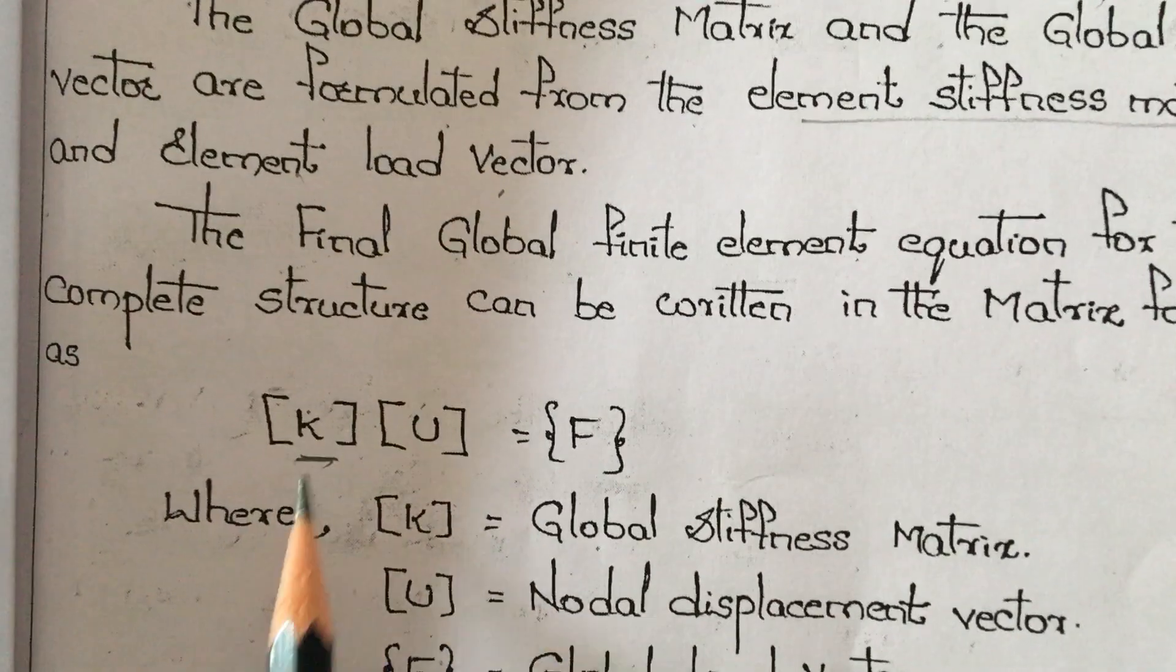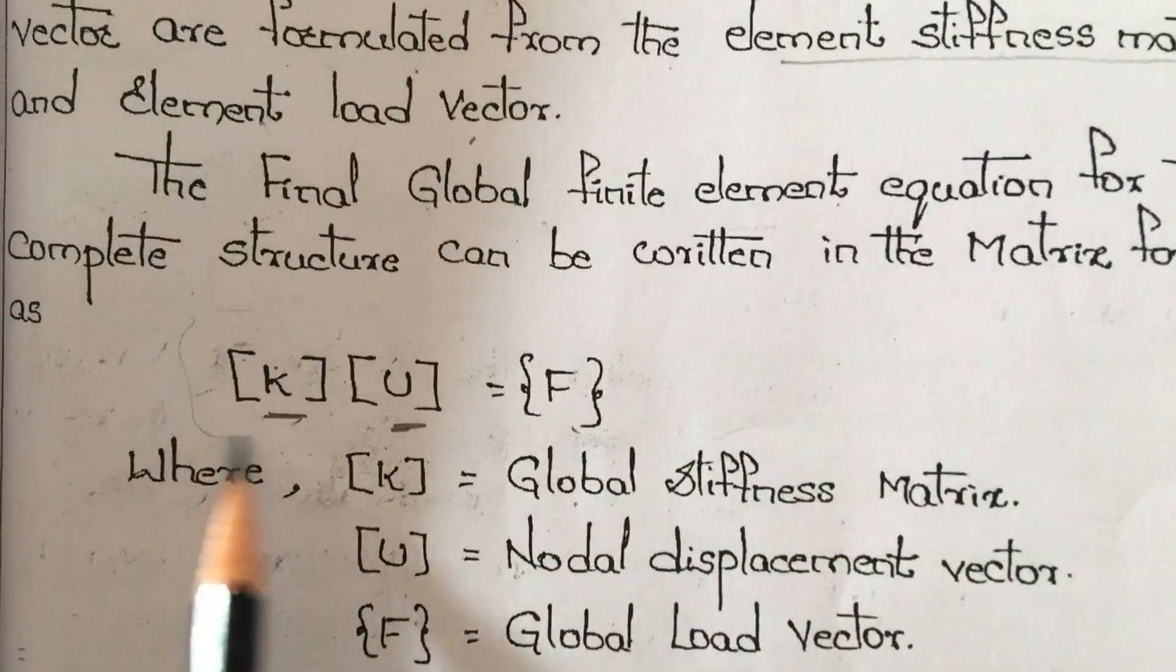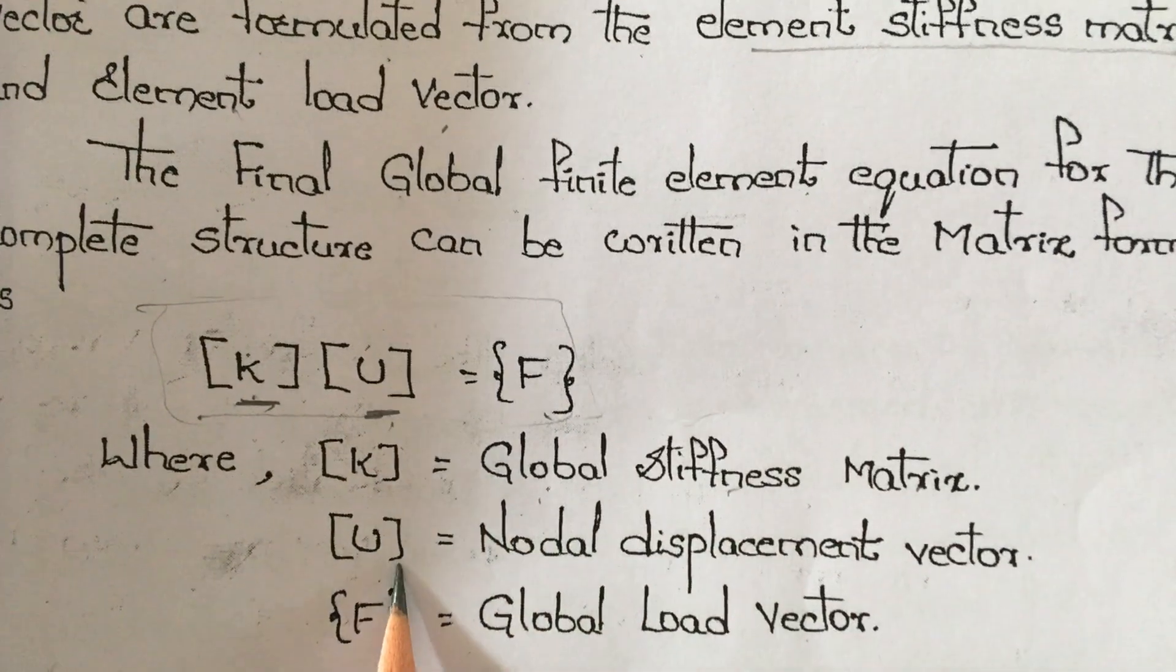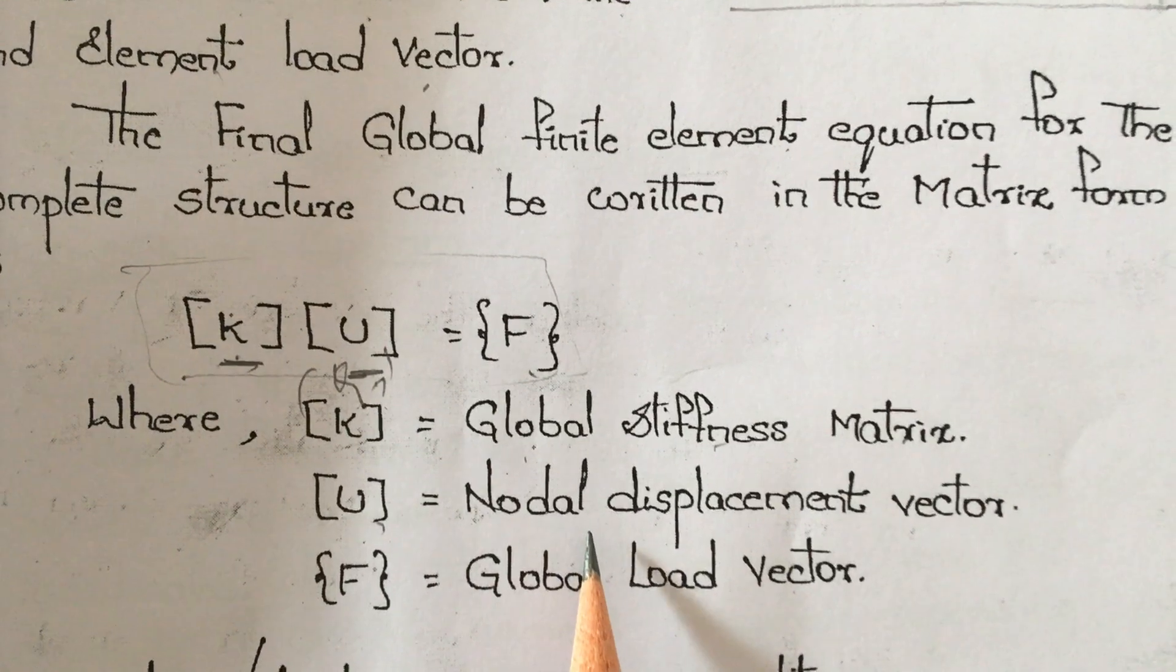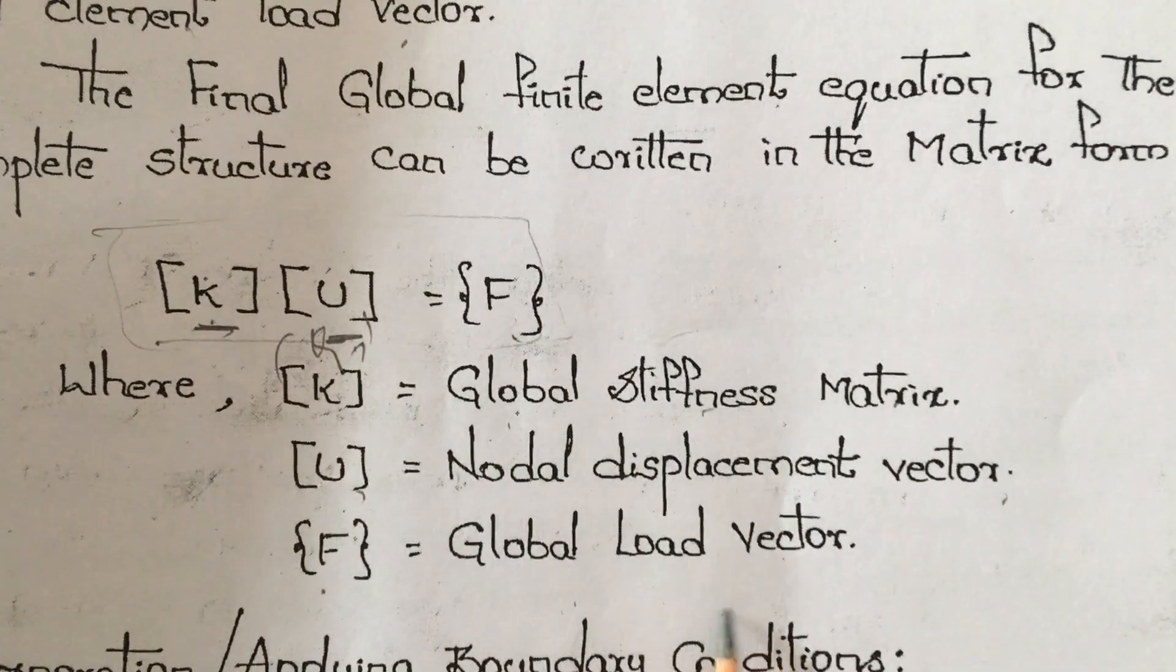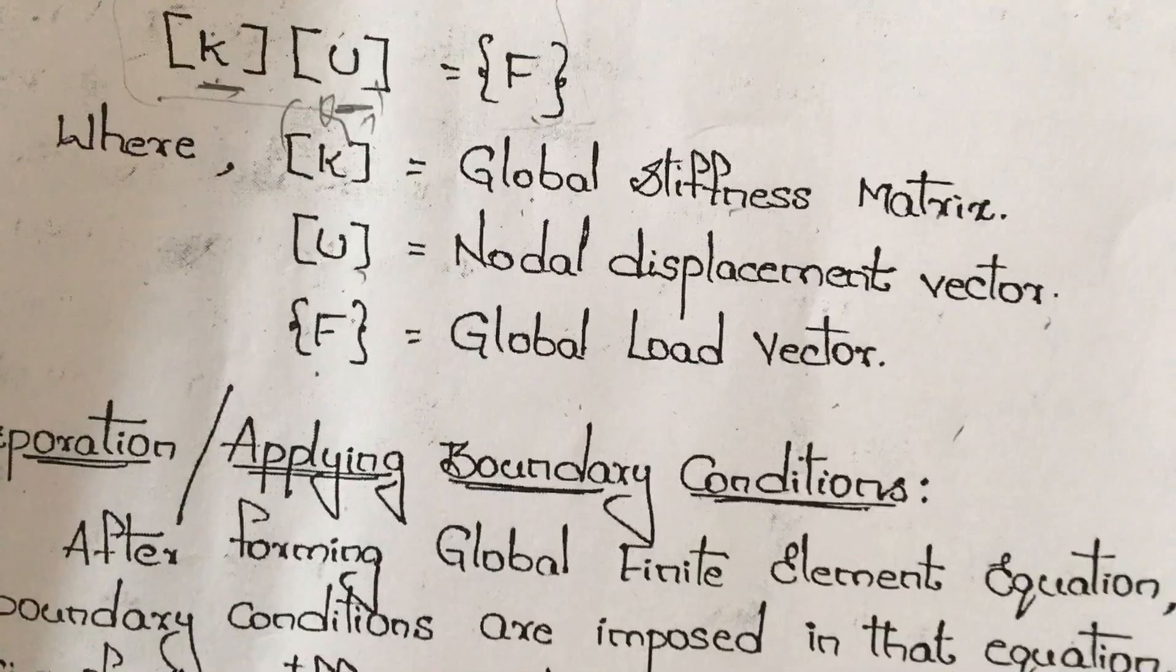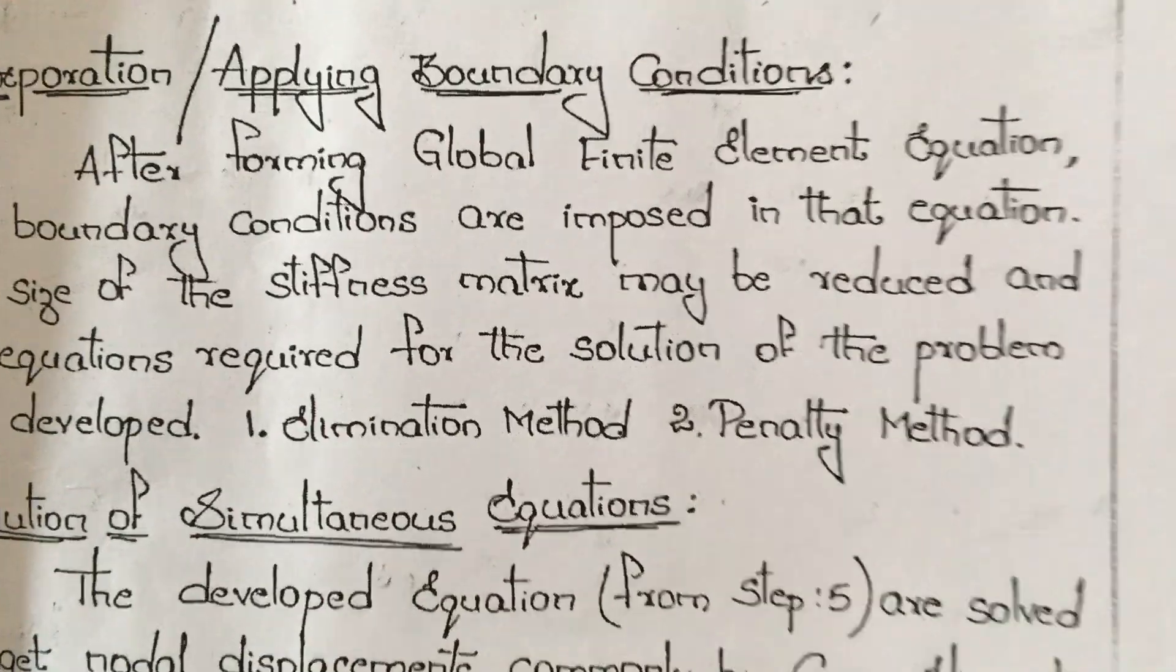This can be written in matrix form. Stiffness K times displacement U will give you the load vector F. K is the global stiffness matrix, U or Q is the nodal displacement vector, and F is the global load vector. These are the things you need to know: first discretization, then displacements, then elemental stiffness matrix, then global stiffness matrix.